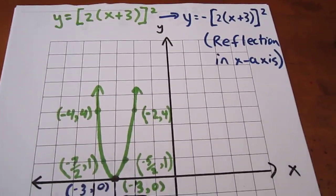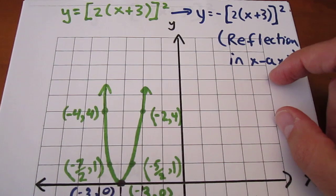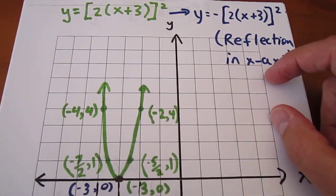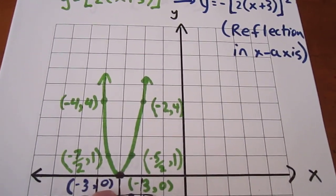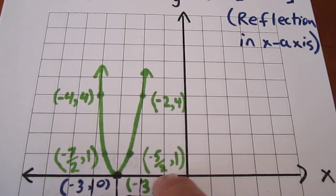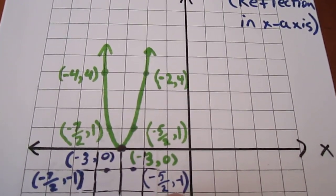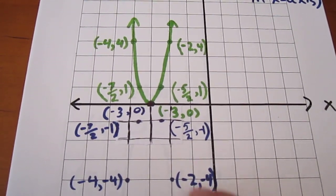We're now going to consider what happens when we reflect this in the x-axis. Reflecting it in the x-axis basically means multiplying each y coordinate by negative 1. Negative 3, 0 gets moved to negative 3, 0. But here's where the changes start happening. Negative 5 halves 1 gets moved to negative 5 halves, negative 1. Negative 2, 4 gets moved to negative 2, negative 4.